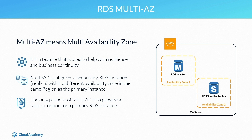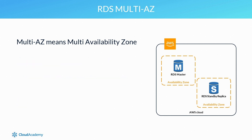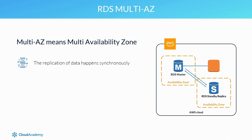It's not to be used as a secondary replica to offload read-only traffic — that is the role of the read replica, which is very different. It's important to understand that key difference. The replication of data between the primary RDS database and the secondary replica instance happens synchronously. Amazon RDS offers different configurations for multi-AZ instances based on the database engine type.